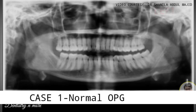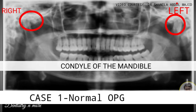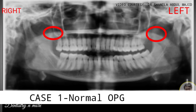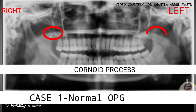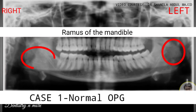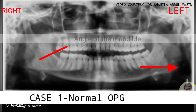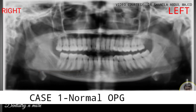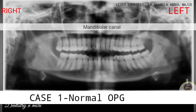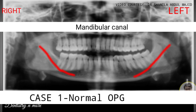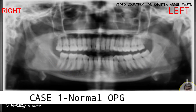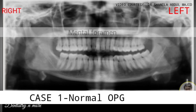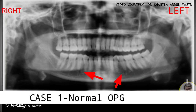First and foremost you see the condyle of the mandible, followed by the sigmoid notch and then the coronoid process. Below the condyle we have the ramus of the mandible and then the angle of the mandible, followed by the inferior border of the mandible. Within the ramus you can see a radiolucency canal — that is the mandibular canal — which terminates towards the second premolar, or in some cases between the mandibular premolars, which is the mental foramen.